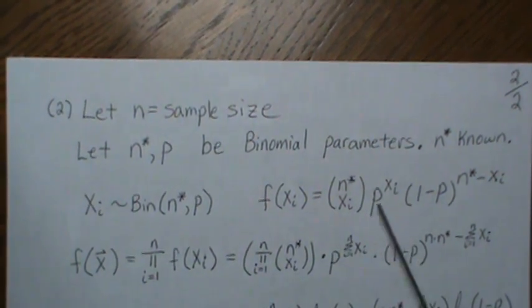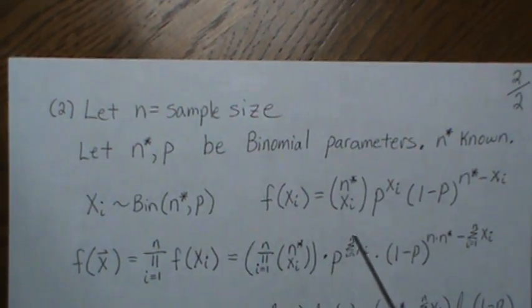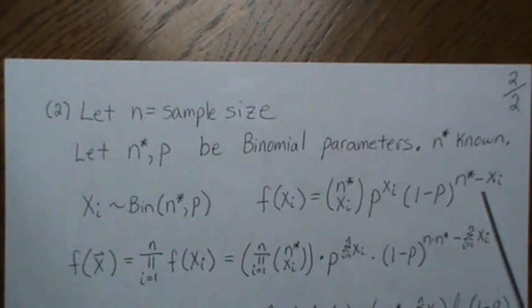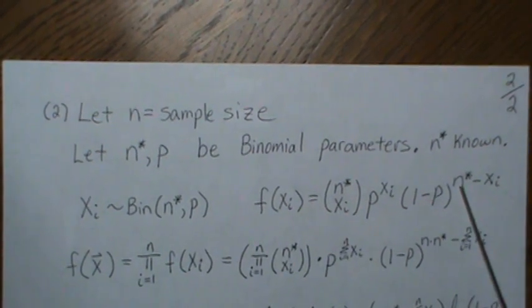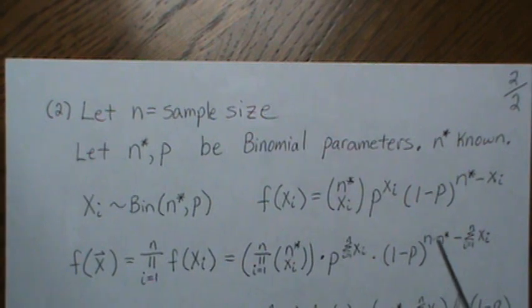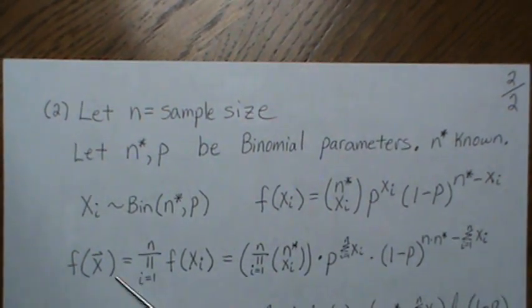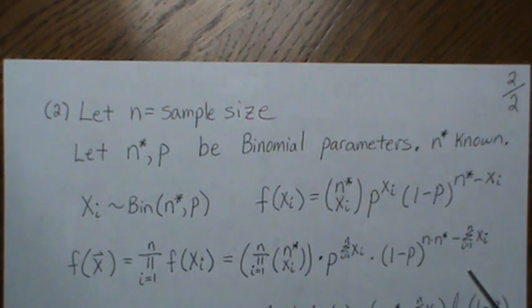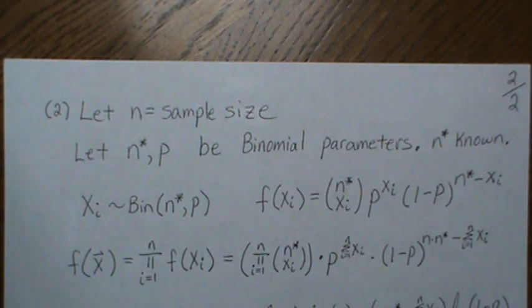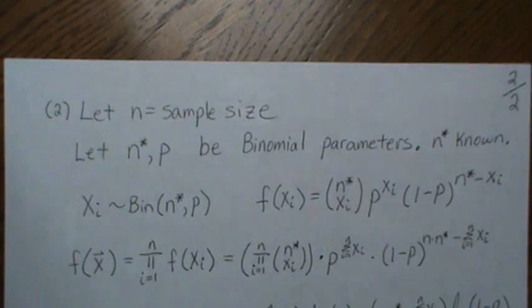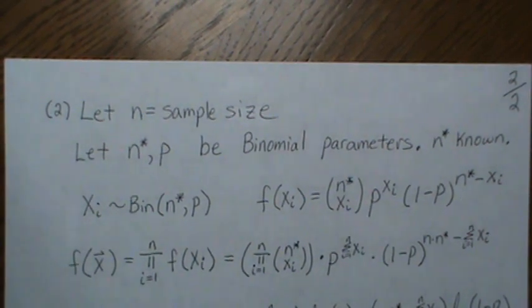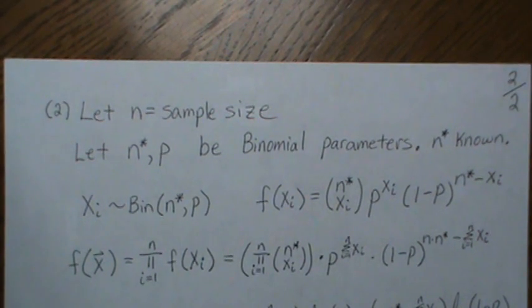But then this one—it becomes the sum of the, you know, it's p times x₁, p raised to x₂, p—it ends up just being p raised to the sum of the xᵢ's. And now there's n of these, and so it's n times n star, and then this is minus the sum of the xᵢ's. And so for some reason this step was missed on all but one video. Well, it wasn't a video—a website that I looked at to double-check my results.